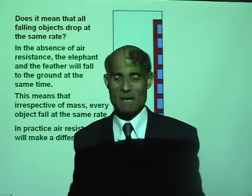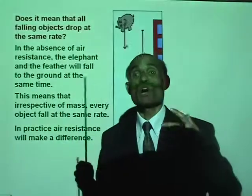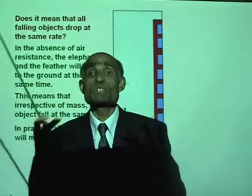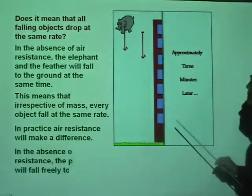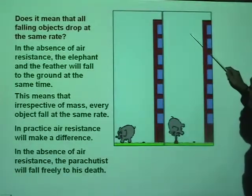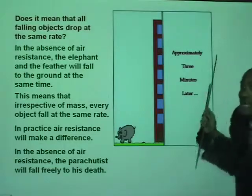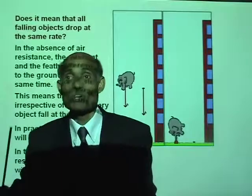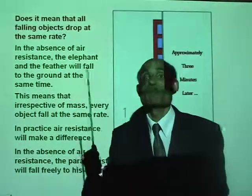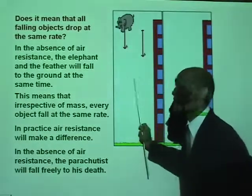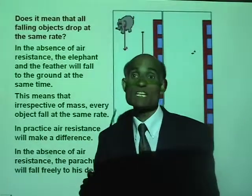In practice, things may not fall at the same time because air resistance affects objects in different ways. If you drop an elephant and a feather, the elephant will fall much faster than the feather in practice because the feather is subjected to air resistance and falls very slowly. But if you do the experiment in a vacuum with no air, both will fall at the same rate.